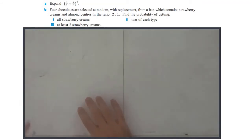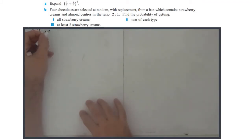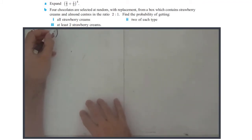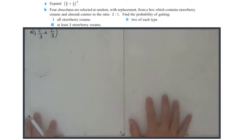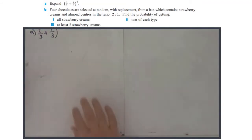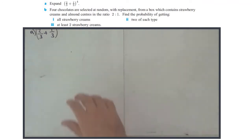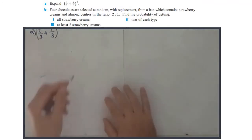So part A is a simple bit. We're going to expand two-thirds plus one-third to the power of four. Since it's quite a low power, we can just use Pascal's Triangle for this.